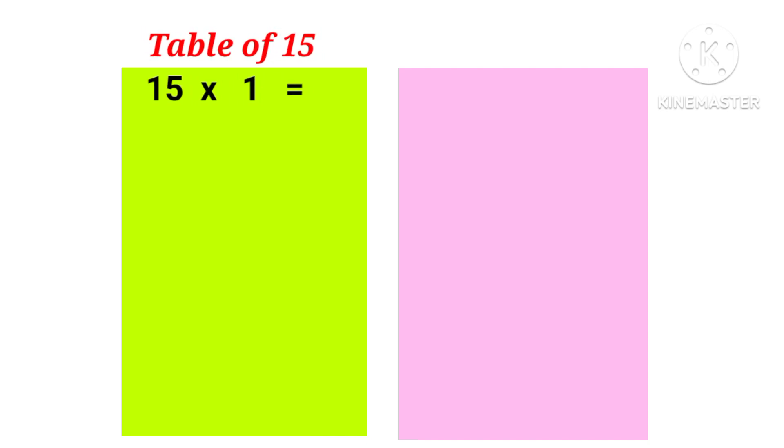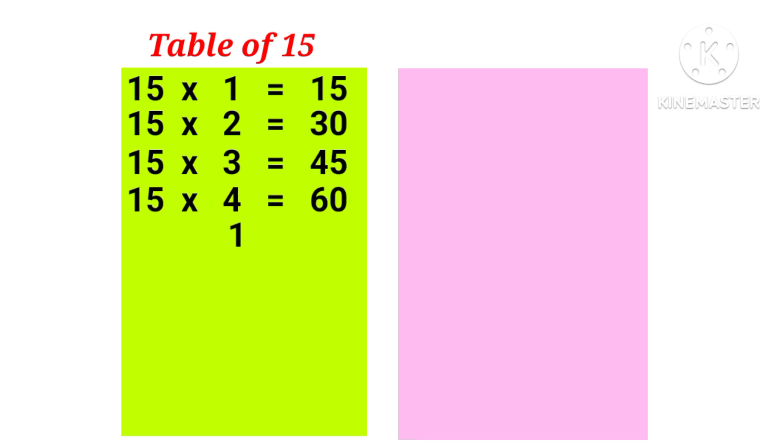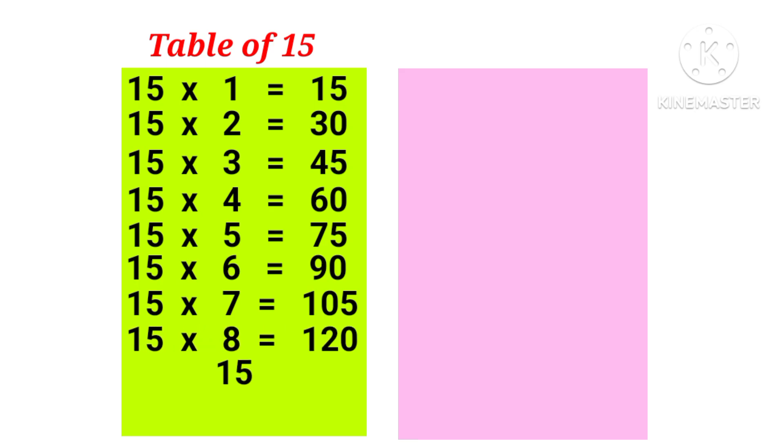15 1s are 15, 15 2s are 30, 15 3s are 45, 15 4s are 60, 15 5s are 75, 15 6s are 90, 15 7s are 105, 15 8s are 120, 15 9s are 135.